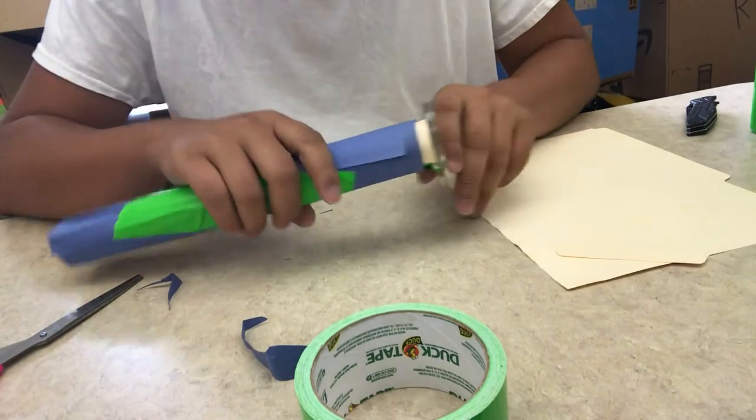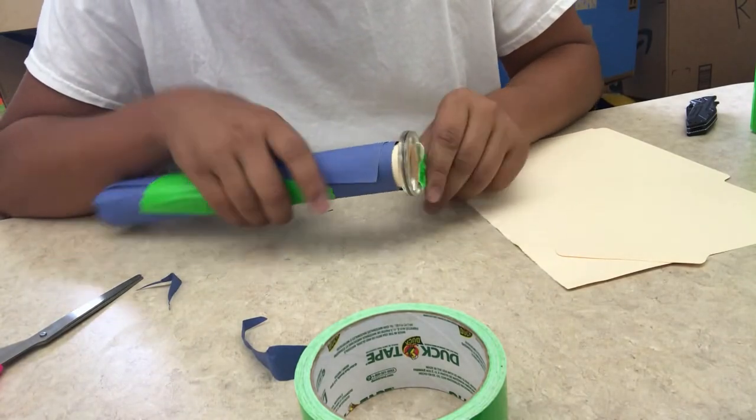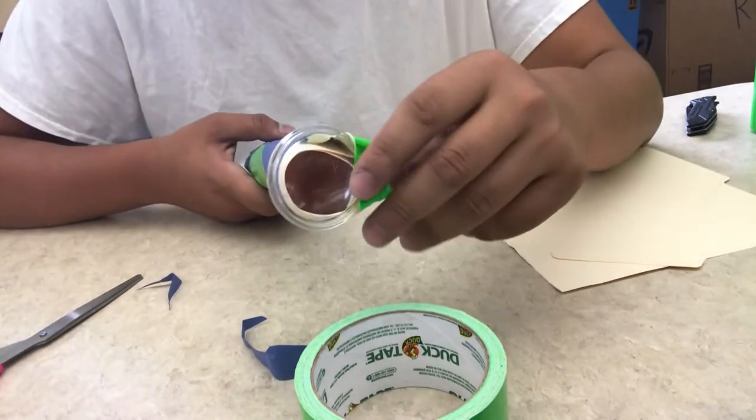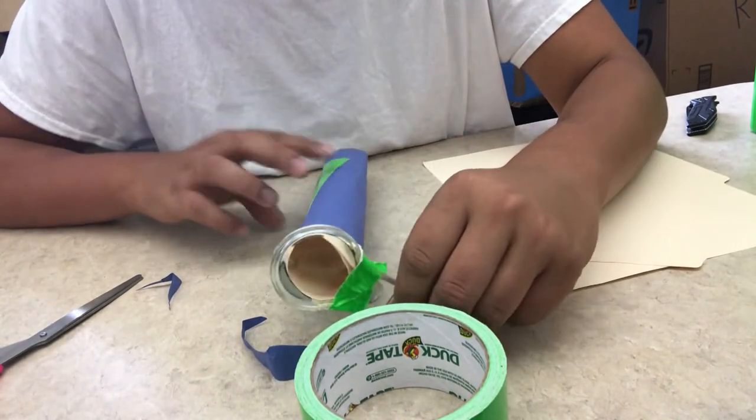Once you're finished with that, now it's all good to go. All you've got to do is hold it up and look through this end here, through the magnifying glass, and everything should appear upside down.